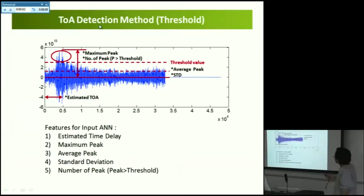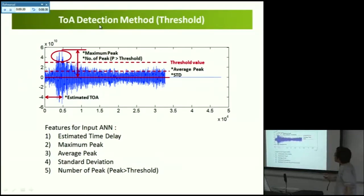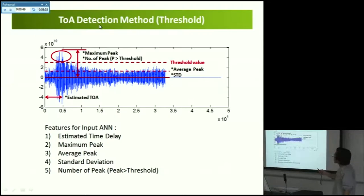This is the typical received signal. I take some features from this signal: the estimated time delay is obtained by detecting the maximum peak and subtracting the trigger time. Then we detect the maximum peak value, the average peak, and because the distribution of peaks is different with or without multi-path effect, I also take standard deviation and number of peaks. The number of peaks is calculated based on a threshold derived from the average and standard deviation — counting peaks higher than this threshold. I use these five inputs to estimate the error.